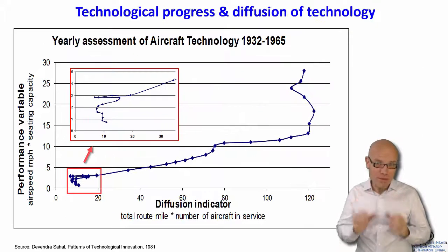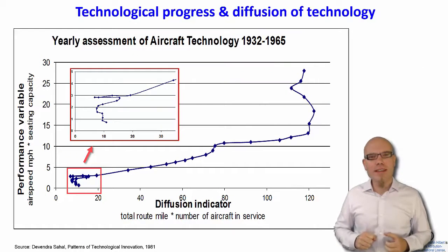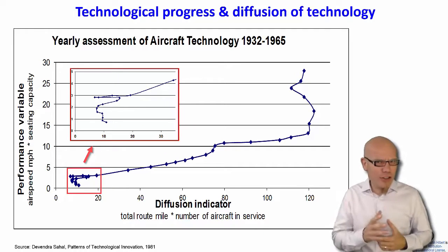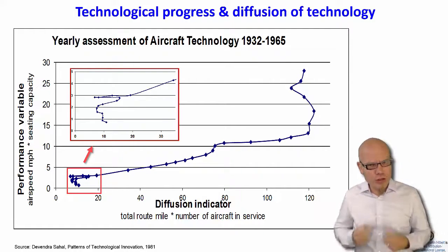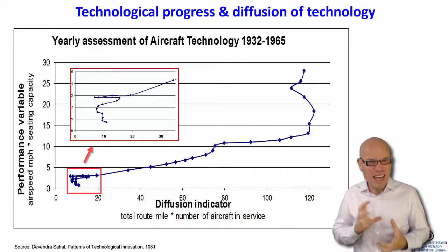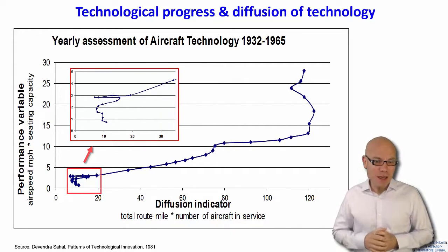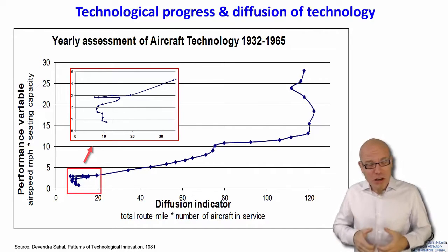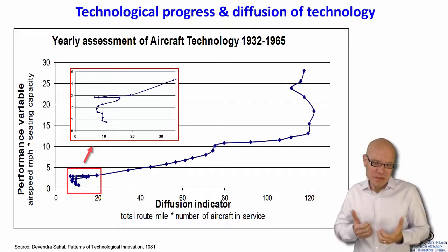For example, in general, you can find that during periods where technology gets better and improves, it doesn't really diffuse — it cannot really diffuse — because while you improve technology, especially through disruptive innovation, you don't really have a defined piece of technology. You're changing it, and you could always continue to improve it.